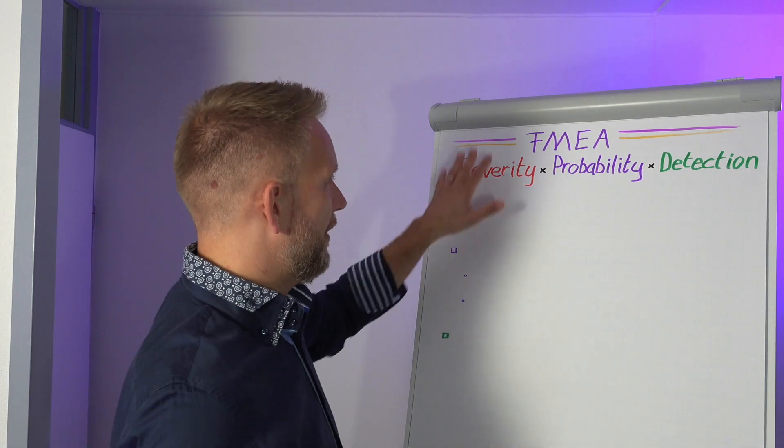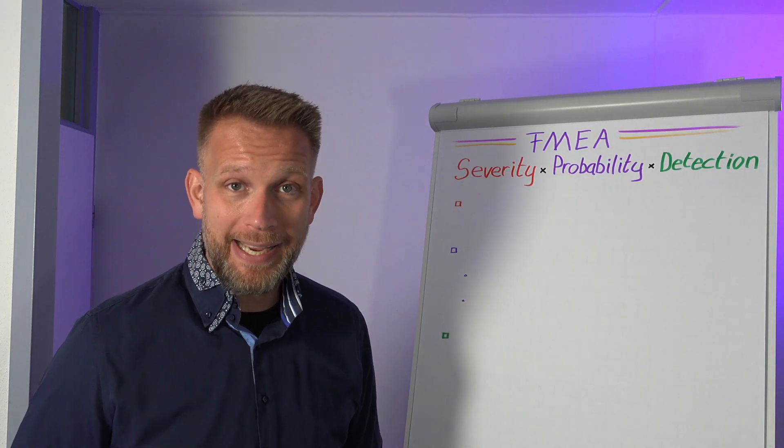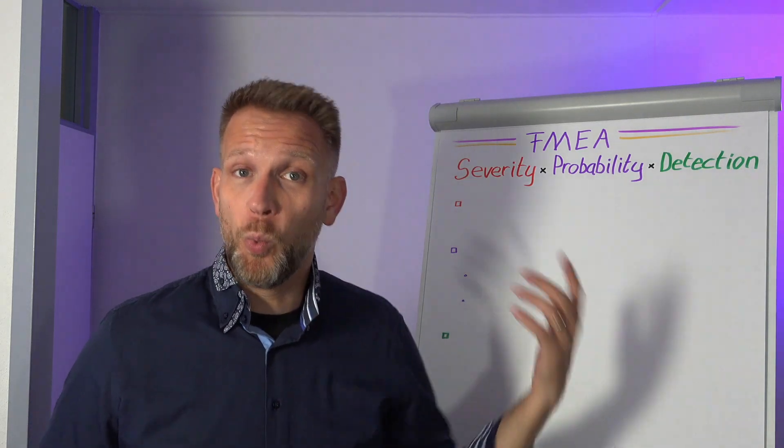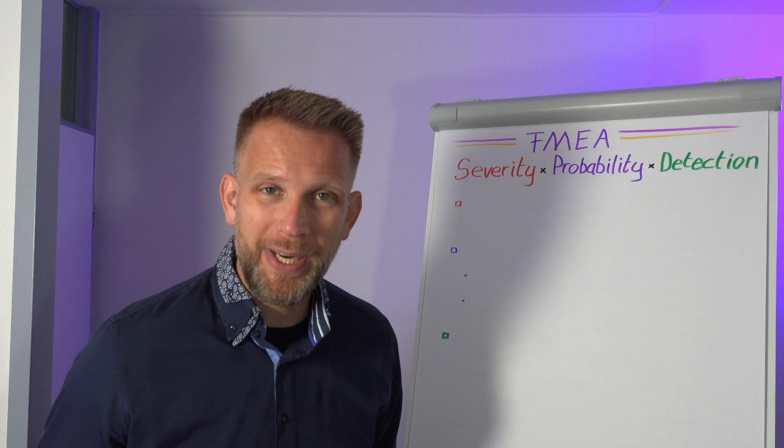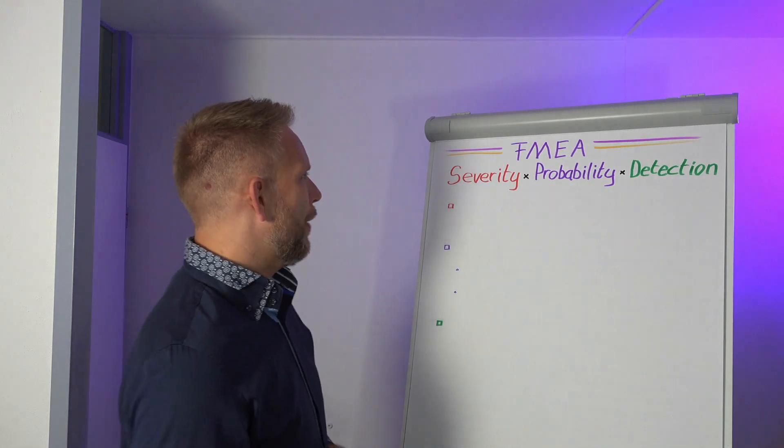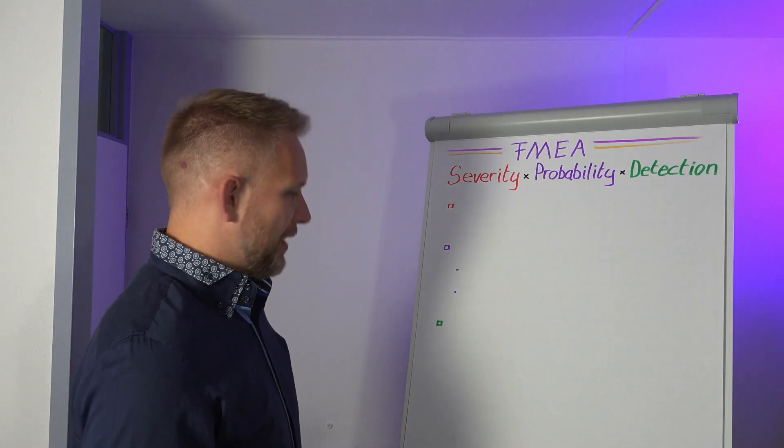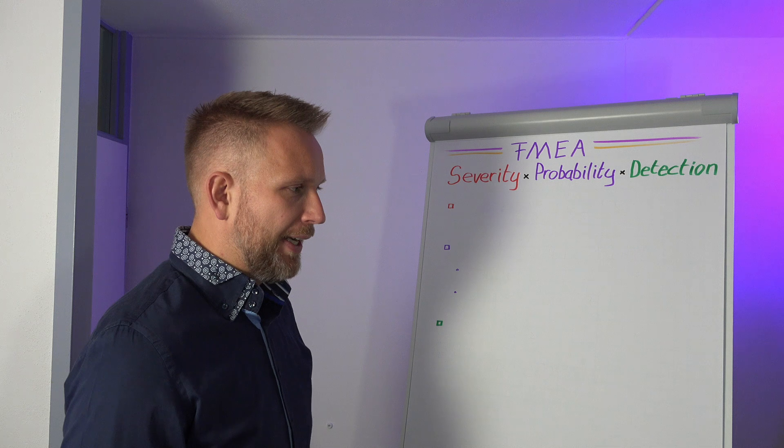Severity, probability, detection together will make a score. The higher the score, the worse this failure mode is, the worse the effect is.